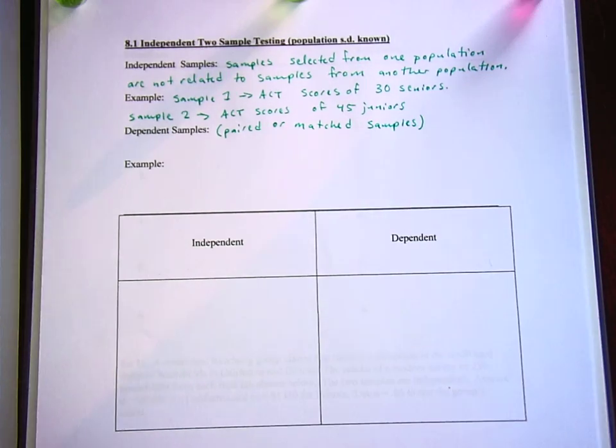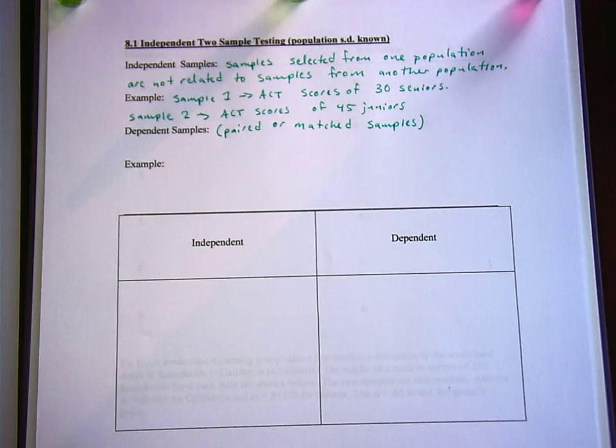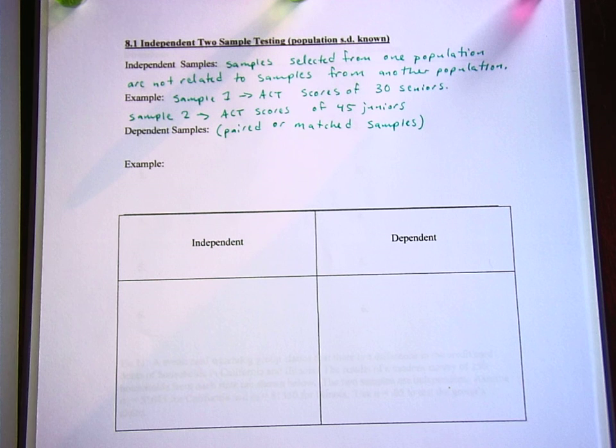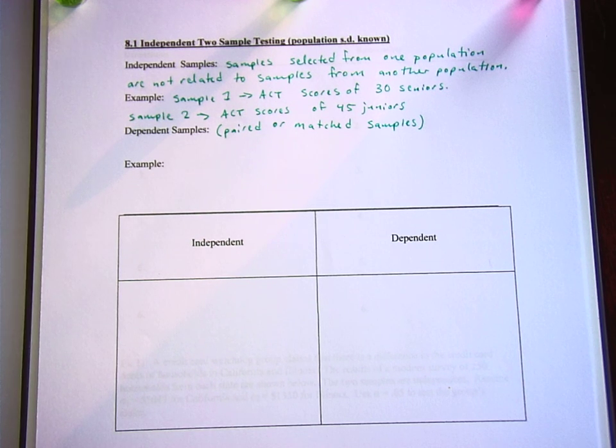So like the ACT scores of the seniors and the juniors, they may have had some of the same teachers and be related in that way. But like if I took one of the 30 seniors and compared their ACT score to one of the 45 juniors, how would I know which senior to compare to which junior? They're not paired up. They're not matched in any way. It'd be different if it was like 30 seniors and 30 juniors that are their brother or something like that or siblings so that we would have a one-to-one connection.